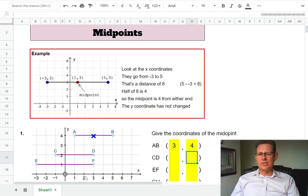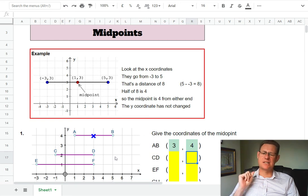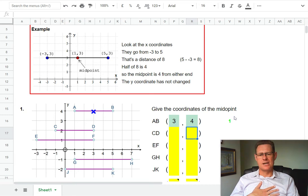The other thing you can do is average the one and the five. So one plus five is six, half of six is three, and that's another way of getting that value. Now the four for the y coordinate has stayed the same for both of those points, A and B.